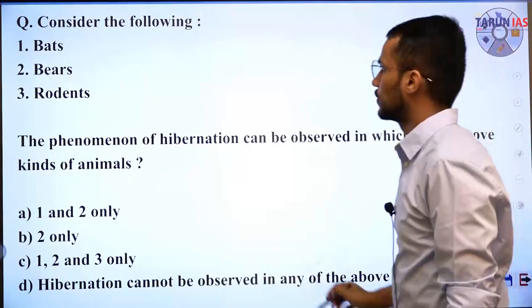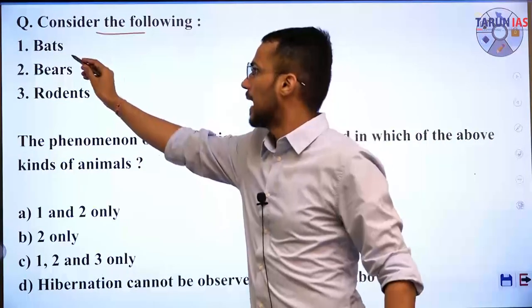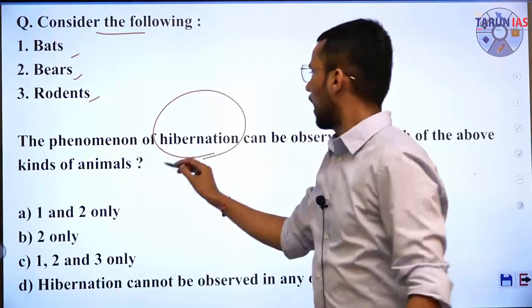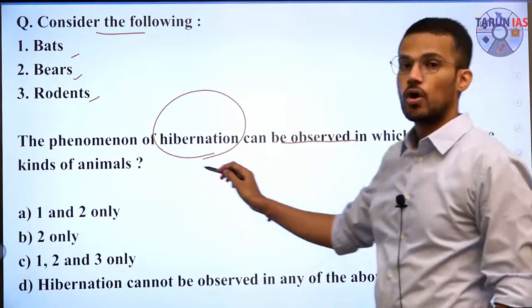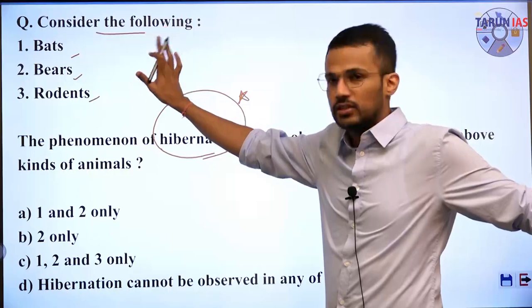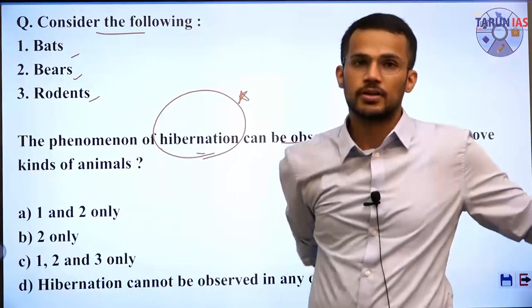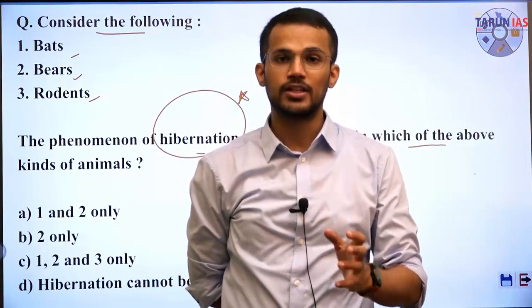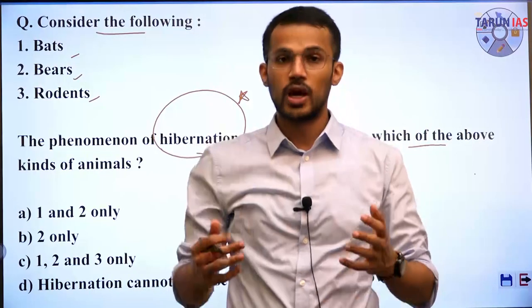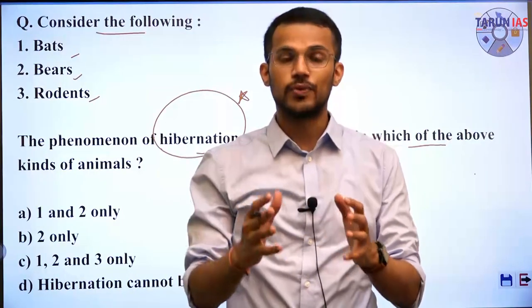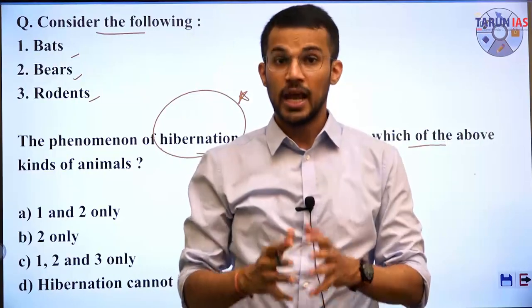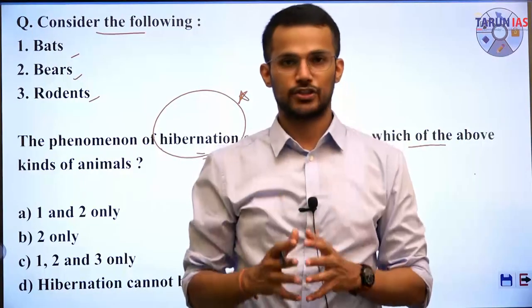The next question considers bats, bears, and rodents, asking in which of these the phenomenon of hibernation can be observed. Hibernation is exhibited by animal species living at higher altitudes or in polar regions with very cold conditions. It is the reduction in activity, reduction in metabolism rate, and fall in breathing rate, allowing animals to protect themselves from cold and use stored food for longer periods.